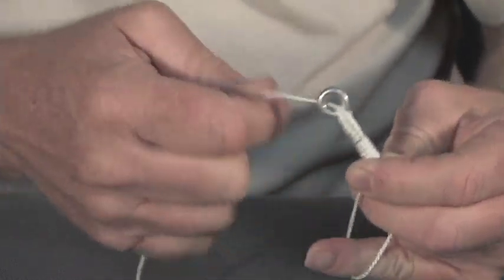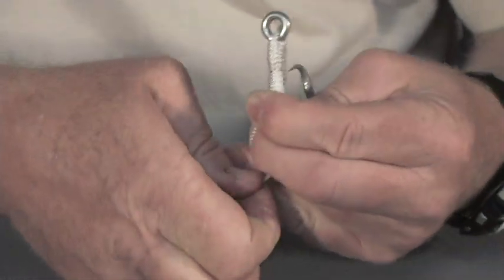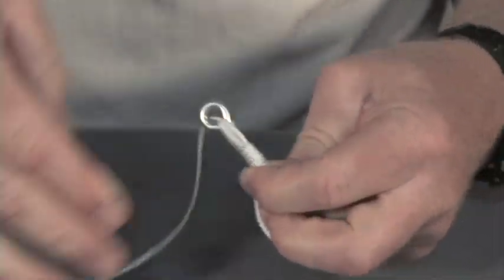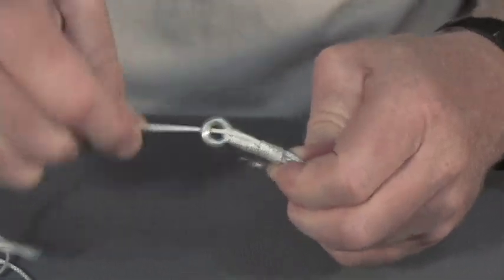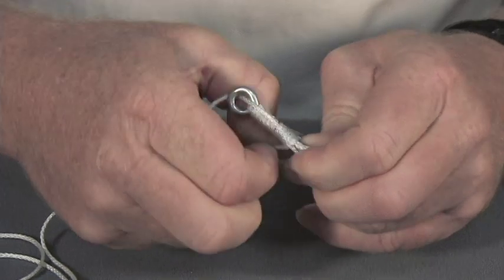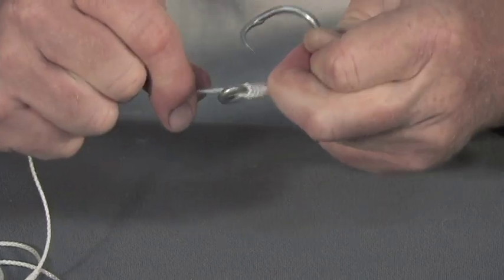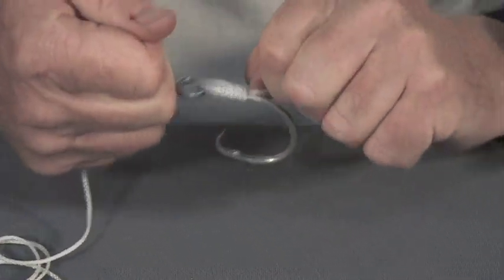As you pull it up, hold those kinks out. It's harder to do with bigger braided line than with monofilament. Then pull on both ends and tighten it up.